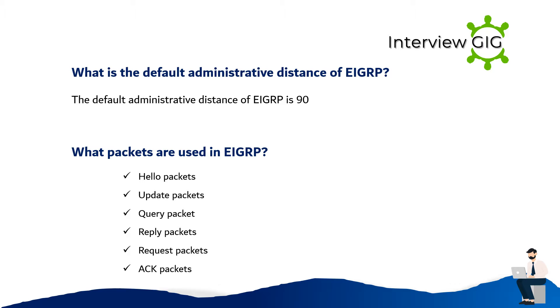What packets are used in EIGRP? Hello packets, update packets, query packets, reply packets, request packets, and ACK packets.